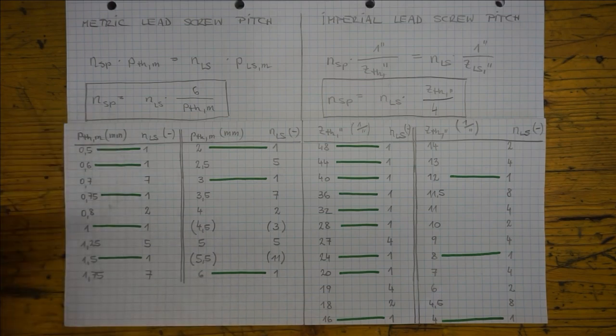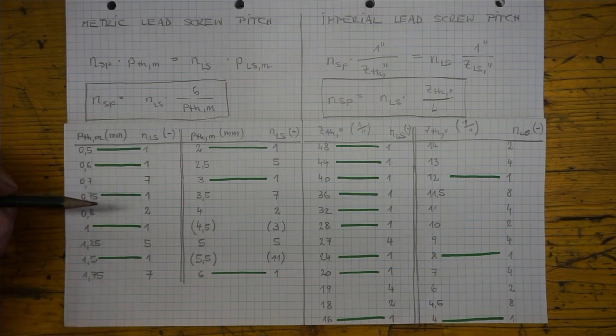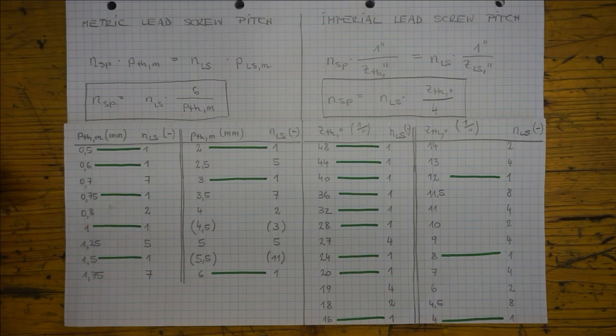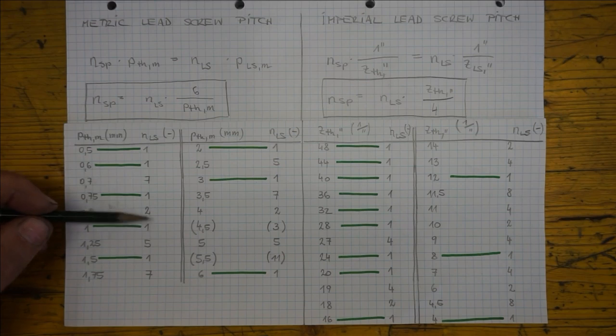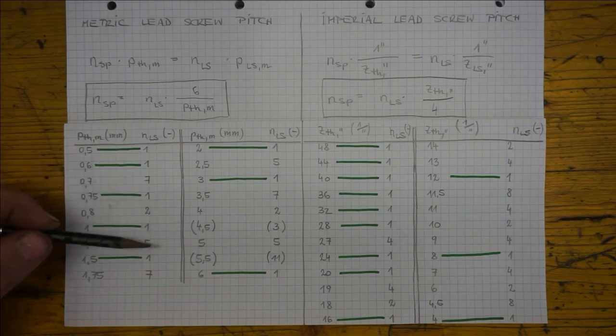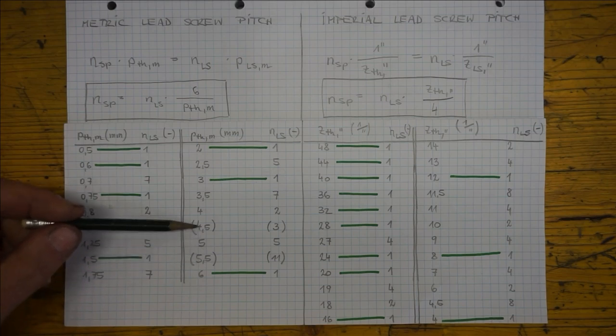But what about the unhighlighted thread pitches here in the tables? Well, the number NLS shows us that if we disengage the clasp nut we must wait for, for example here, 7 lead screw leads to pass until we may re-engage without meshing problem. Here we have 2s, 7s, 5s and a few other numbers. These 2 here are in braces because they are quite rare pitches.